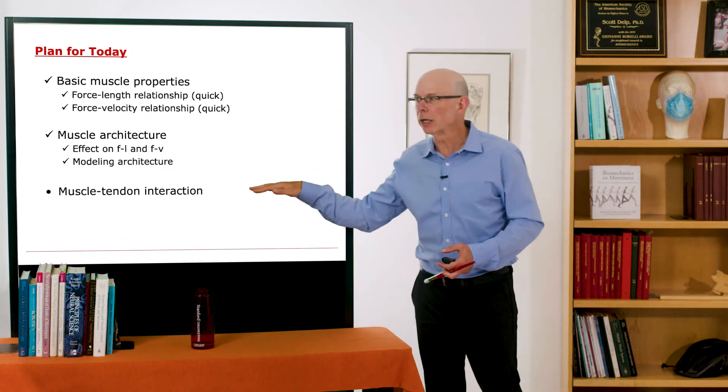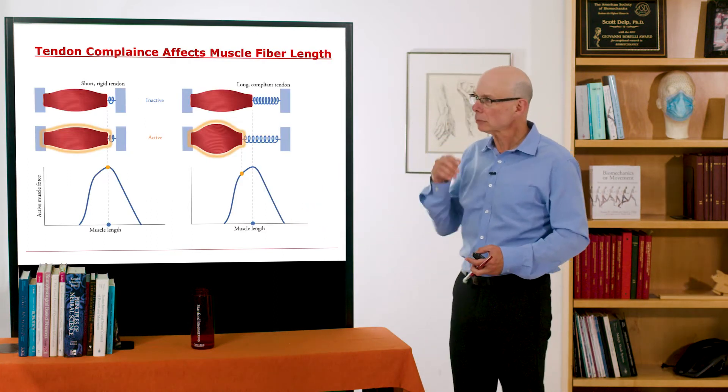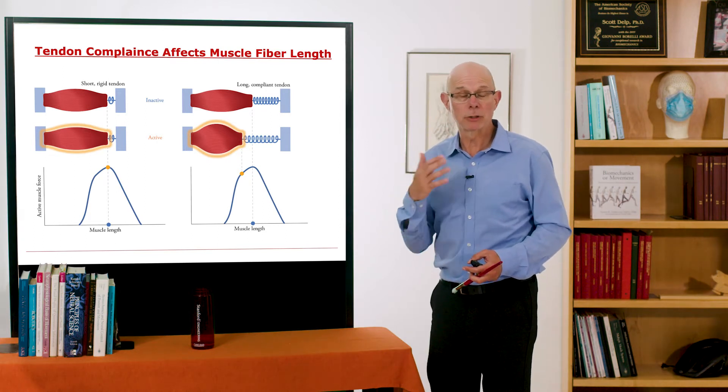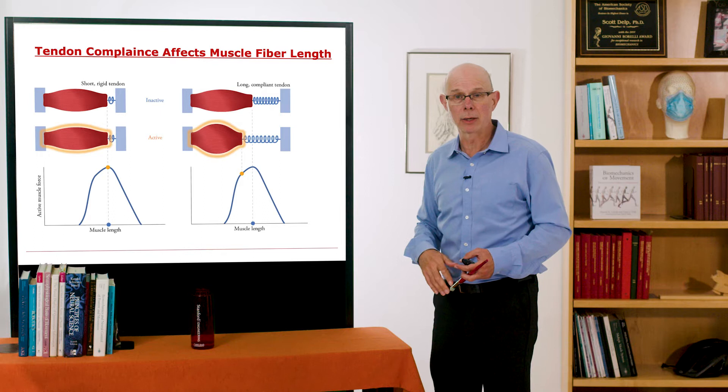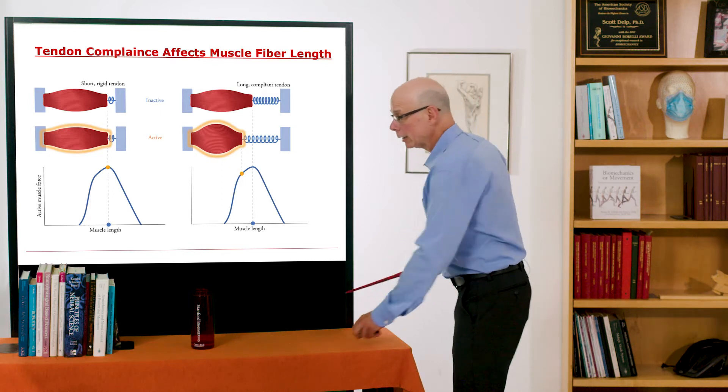So let's talk just briefly to conclude about muscle-tendon interactions. Tendon compliance affects muscle length and muscle velocity. I'll just show you muscle length here. And that effect depends on the architecture of muscle.